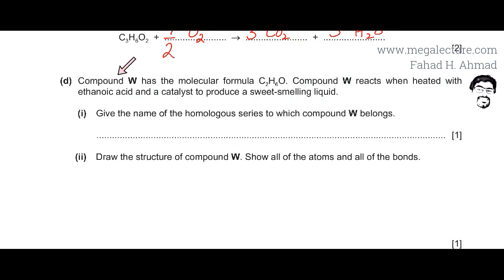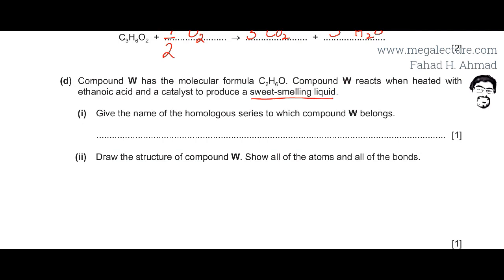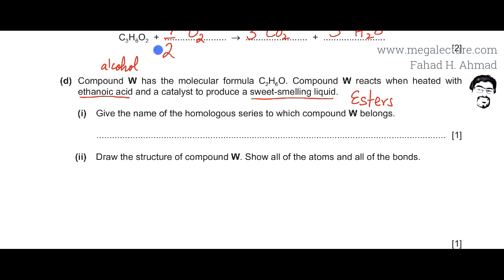Part D: Compound W has the molecular formula C2H6O. Compound W reacts when heated with ethanoic acid and a catalyst to produce a sweet-smelling liquid. In organic chemistry, the only sweet-smelling liquid studied at O-level is esters. An ester is produced when a carboxylic acid reacts with an alcohol, which means compound W must be an alcohol.